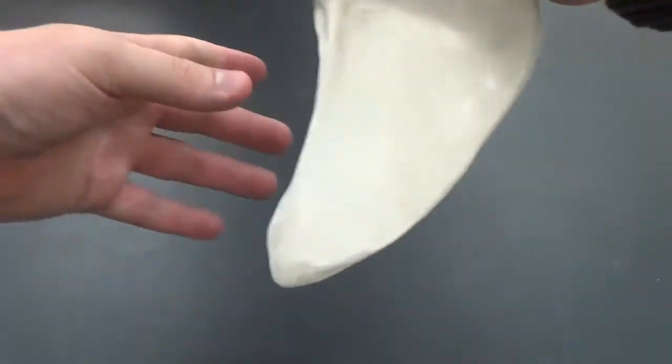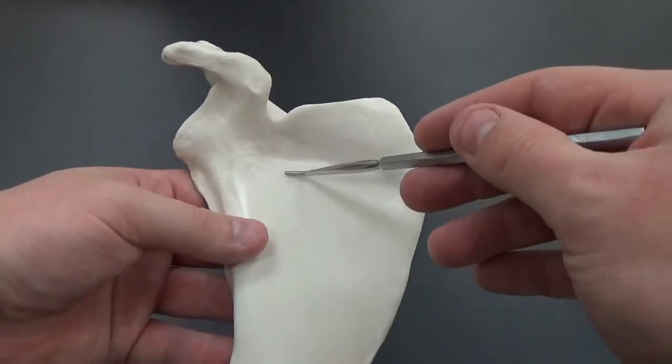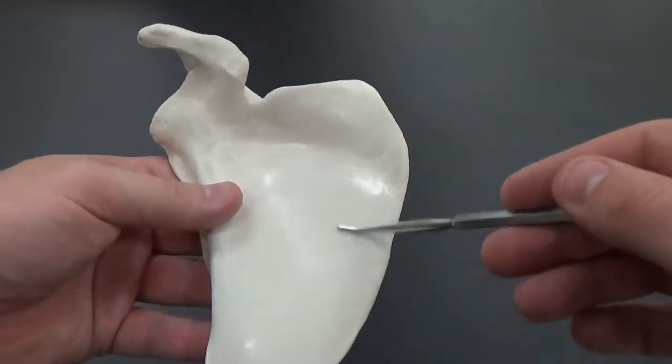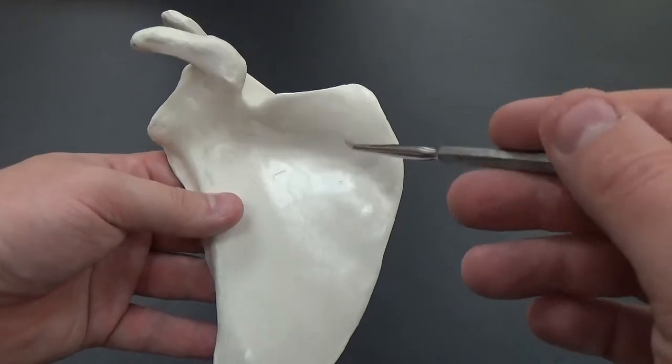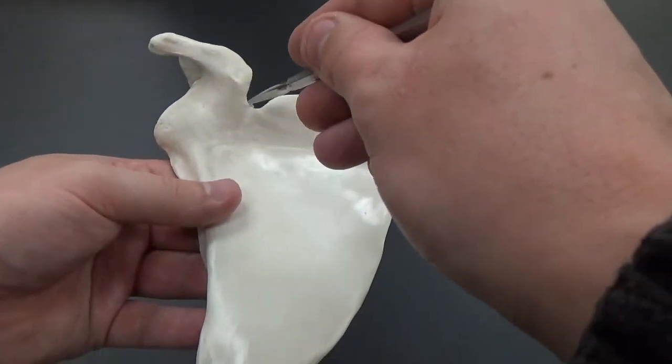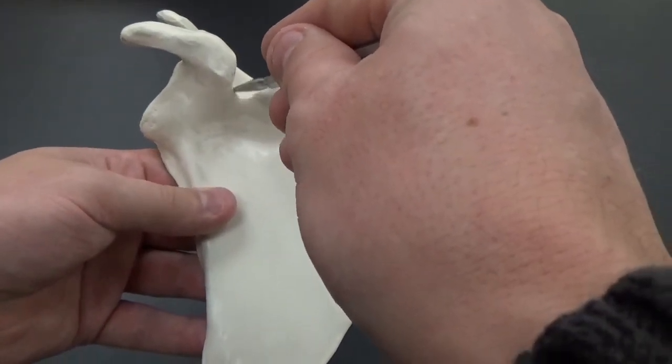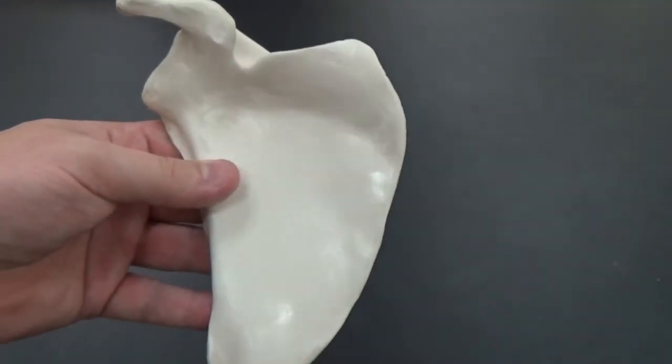On the backside, flipping it over here, we have the subscapularis fossa. You also have this notch right here. This is called the suprascapular notch.